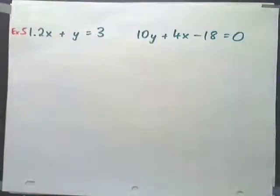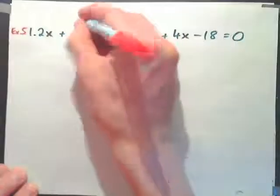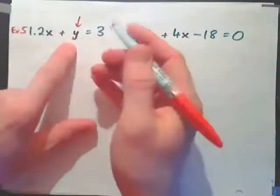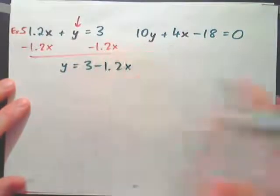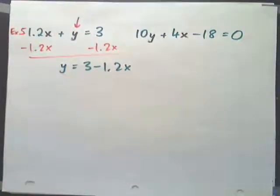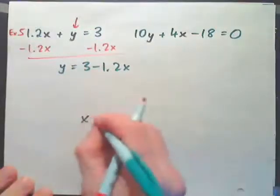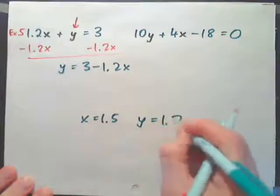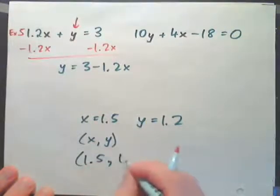For example 5, what variable do you solve for first? You can solve for either x or y from either equation. The easiest thing is to solve for y in the first equation, since it hasn't been multiplied by anything — just subtract 1.2x from both sides: y equals 3 minus 1.2x. The answer, by the way, should be x equals 1.5 and y equals 1.2, written as the ordered pair (1.5, 1.2).